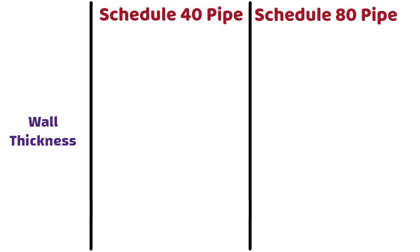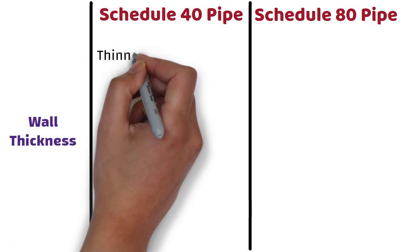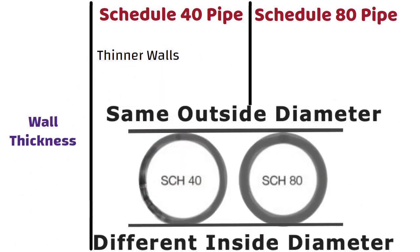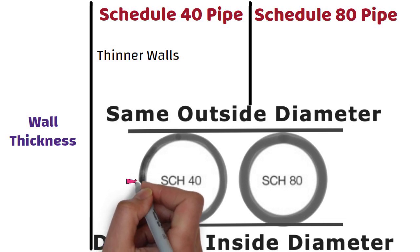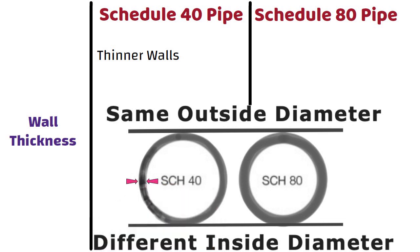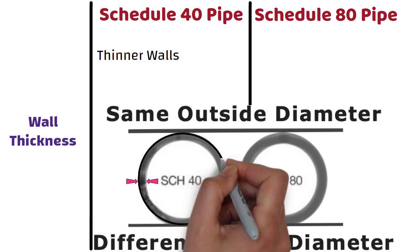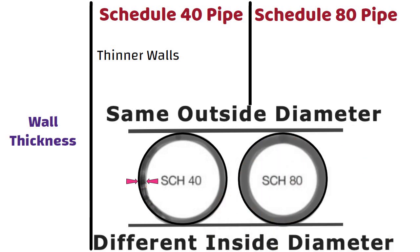Wall thickness: Schedule 40 pipe has thinner walls than schedule 80 pipe for the same pipe size, as you can see in this picture. The outer diameter of the pipe is the same because the extra thickness of schedule 80 is on the inside. Schedule 80 pipe has a thicker wall even though its outer diameter is similar to schedule 40 pipe.